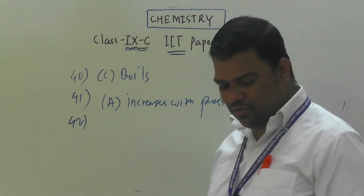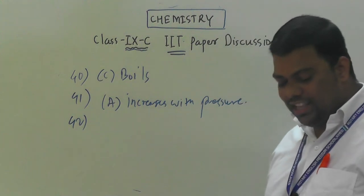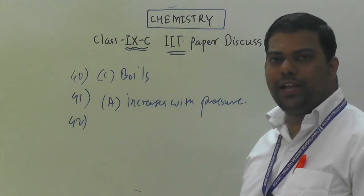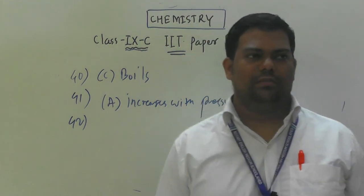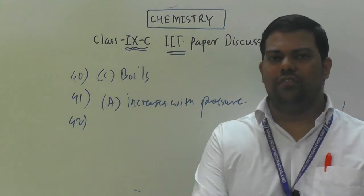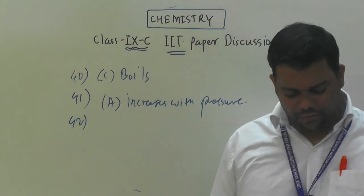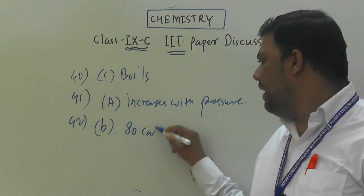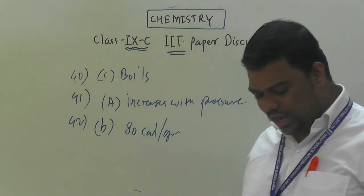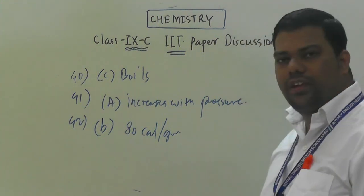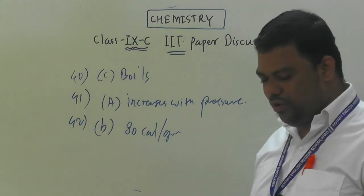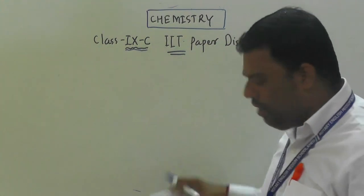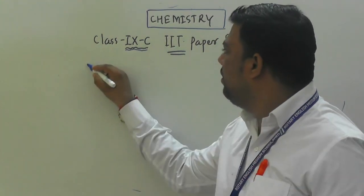Question number 42: the latent heat of fusion for ice is a constant value — option B: 80 calories per gram.